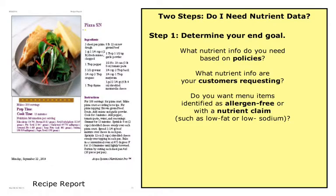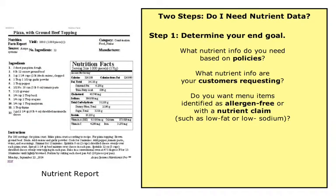Step 1: Determine your end goal. Ask questions such as, what nutrient information do you need based on policies? What nutrient information are your customers requesting? Or do you want menu items identified as allergen-free or with a nutrient claim, such as low-fat or low-sodium?